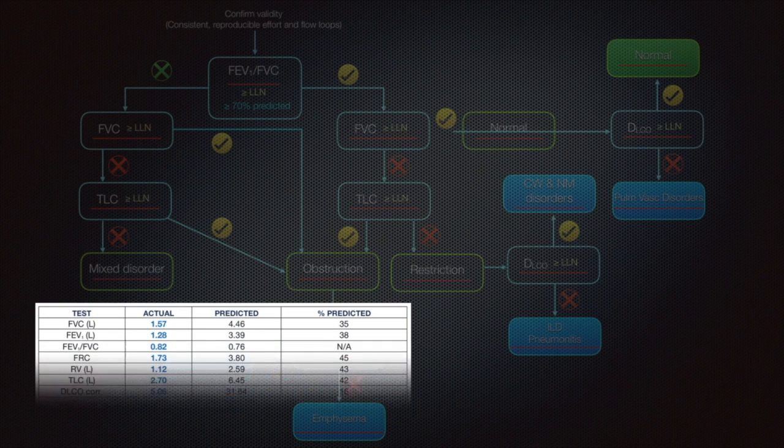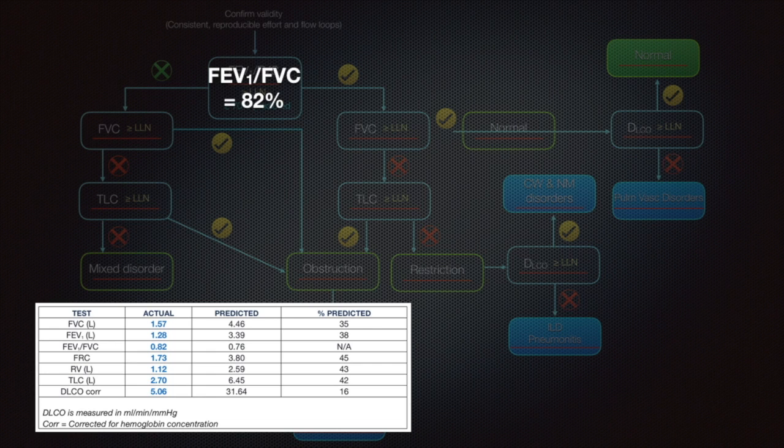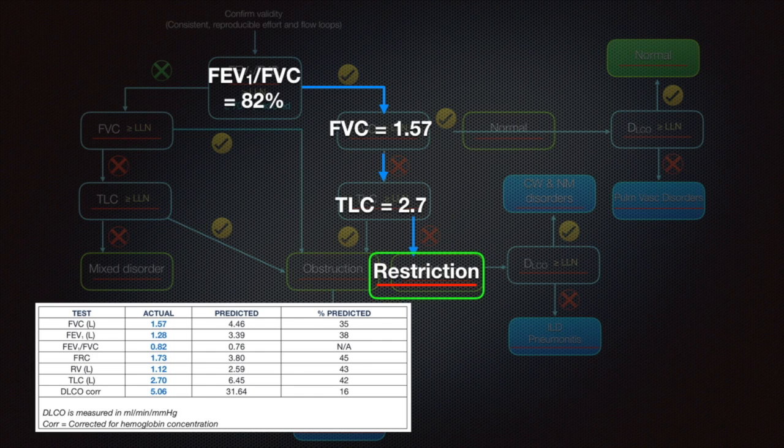Now we will try to plot his values. First, FEV1 by FVC, which is 82 percent, very much accepted. But actually, are we going to a normal PFT? We move to the right side of the algorithm. Check the FVC: 1.57, which is much less than the predicted, only 35 percent of the predicted value. Now as per the flowchart, we go ahead and check the total lung capacity. It is 2.7 liters, that is only 42 percent of the predicted. So his lungs are shrunken. Just because his FEV1 by FVC is acceptable, we cannot label this as a normal PFT. After proceeding to the next two steps, we came to know that his lung volumes are much reduced. So we can make a diagnosis of a restrictive lung pathology.